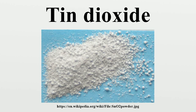Tin oxide, also known by the systematic name stannic oxide in the older notation, is the inorganic compound with the formula SnO₂. It is not named tin dioxide because tin is a type 2 metal, and so is named tin oxide by nomenclature. The mineral form of SnO₂ is called cassiterite, and this is the main ore of tin.